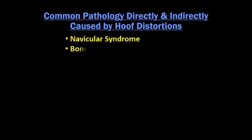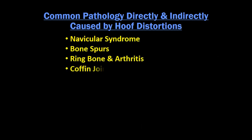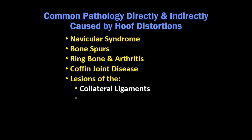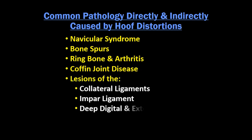Common pathologies directly and indirectly caused by hoof distortions include: navicular syndrome, bone spurs, ring bone and arthritis, coffin joint disease, lesions of the collateral ligaments, impar ligament, and deep digital and extensor flexor tendon issues.